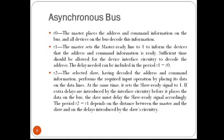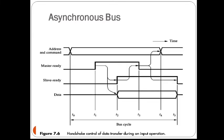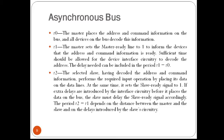At clock T0, the master places the address and command information on the bus, and all devices on the bus begin to decode this information. At clock T1, the master sets the master ready line to 1 to inform the IO devices that the address and command information is ready.